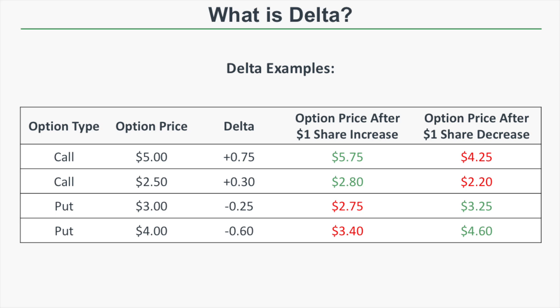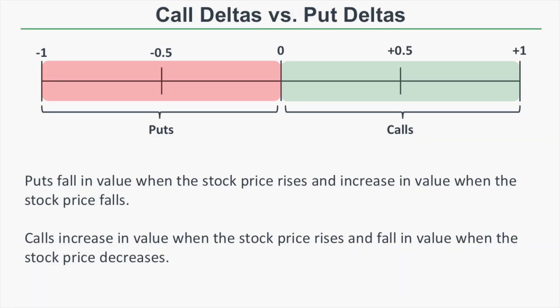Puts have negative deltas, which indicates that the option's price is expected to fall when the stock rises and rise when the stock price falls. For example, a $3 put option with a Delta of negative 0.25 — if the stock rises by $1, that option is expected to fall by $0.25 to $2.75. If the stock falls by $1, it increases by $0.25 to $3.25. To estimate price after a $1 increase, add the Delta; after a $1 decrease, subtract the Delta.